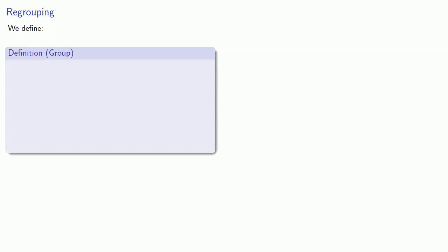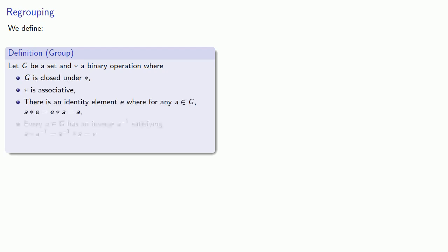So we defined a group as an algebraic structure with the following properties. Let G be a set and star some binary operation where G is closed under star, star is associative, there is an identity element E, and every element of G has an inverse. And in that case, we say that G star is a group.